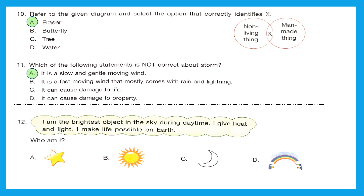Question 12 is a riddle: I am the brightest object in the sky during daytime; I give heat and light; I make life possible on earth. What could that be? Obviously, it is option B, sun.